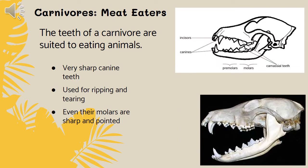The next type of teeth adaptation belongs to carnivores, or meat eaters. The teeth of a carnivore are suited to eating animals. They're going to have very sharp canine teeth or pointed teeth, used for ripping and tearing. Even the molars in the back of their mouth are going to be sharp and pointed — again for tearing apart the meat the animal would be eating.